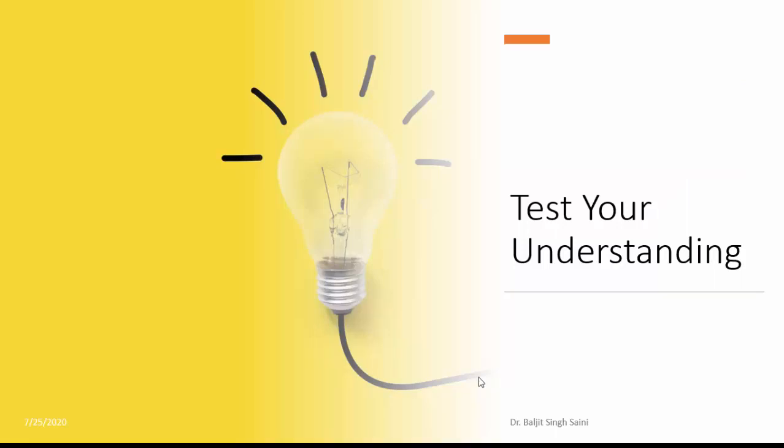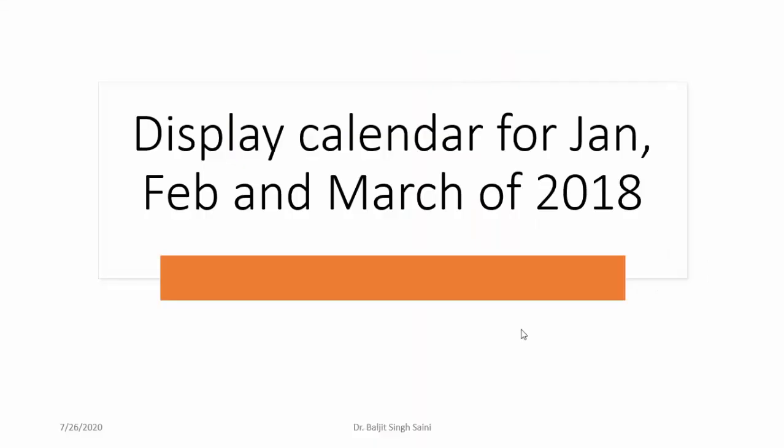Now for practice questions. Question one: display the calendar for January, February, and March of 2018. The answer is 'cal 1 -A 2 2018'. The '-A' option, when combined with 'cal 1 2018' for the first month, adds two more months after it. So starting from January, two months after gives February and March, all for the year 2018.